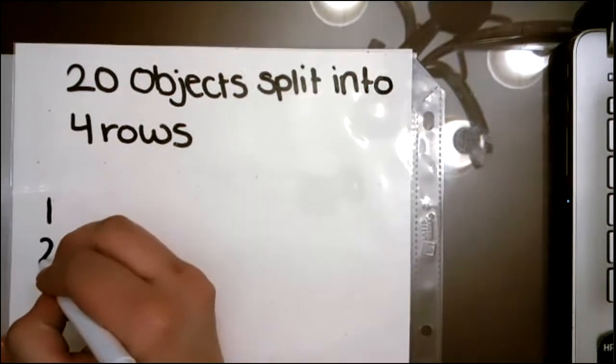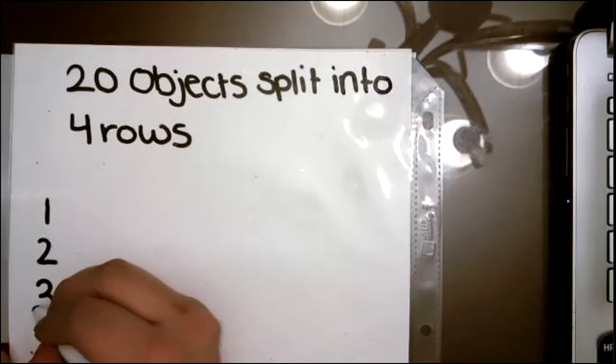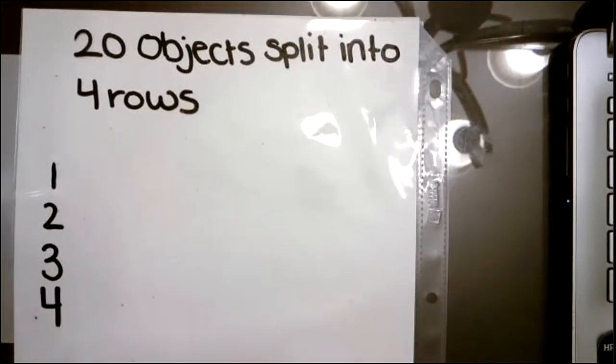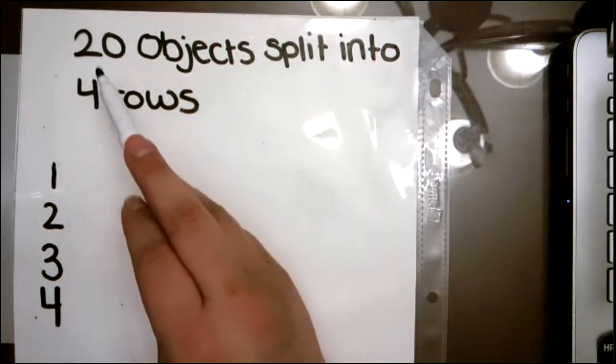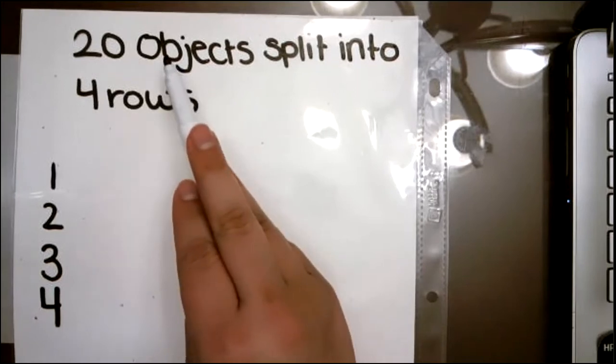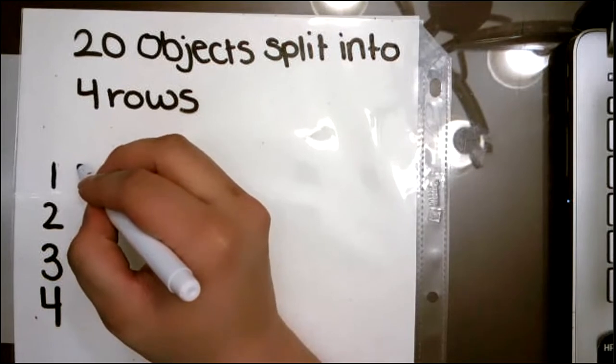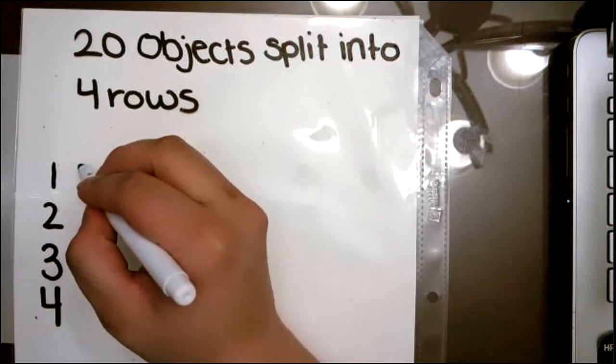So I have 20 objects that are split into four rows. To start, I'm going to number my rows. So one, two, three, and four. Now I'm going to place one object in each row until all of my objects have been placed. So I have 20 objects.